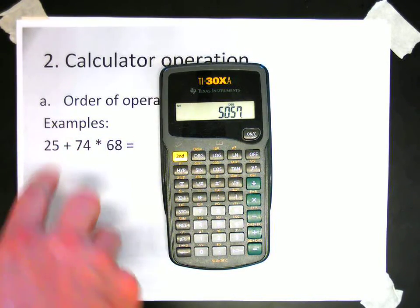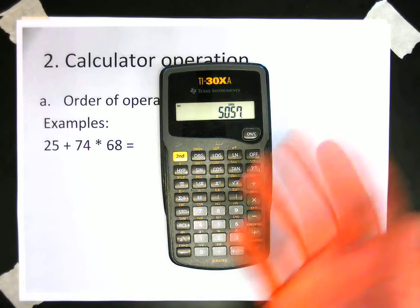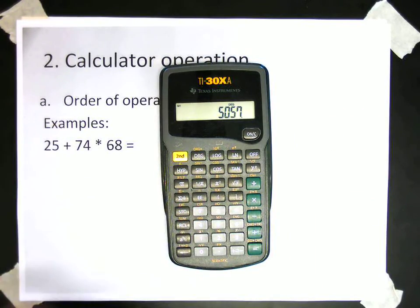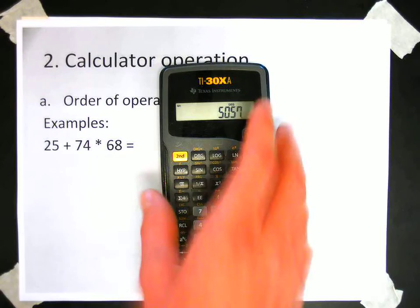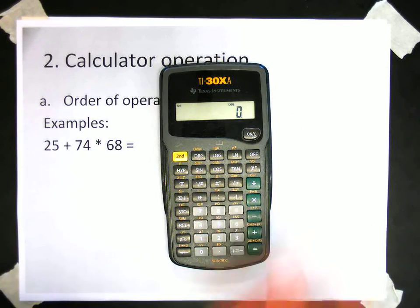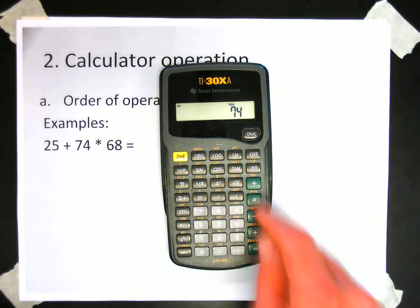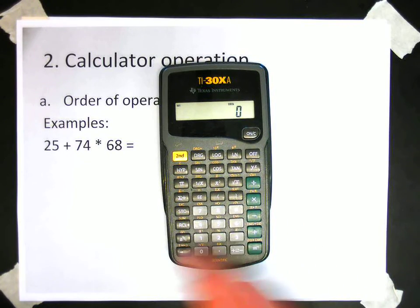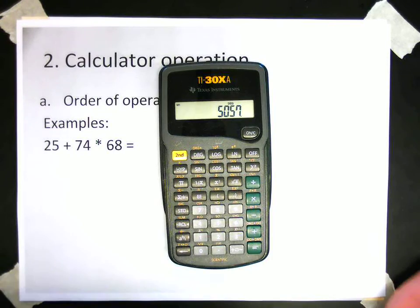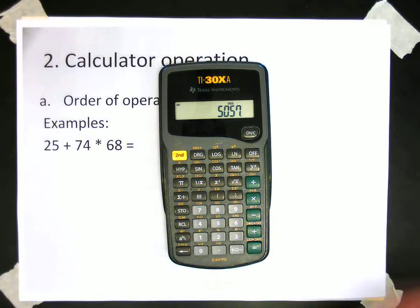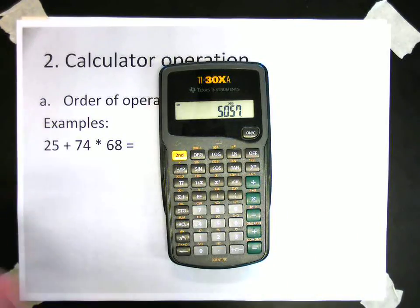Now a lot of calculators are programmed actually to do this correctly, even without putting the parentheses key in. So for instance, if I just type this in 25 plus 74 times 68, it should give me the right answer in most cases. But we'll look at some more complicated examples in a few minutes where that doesn't always happen.